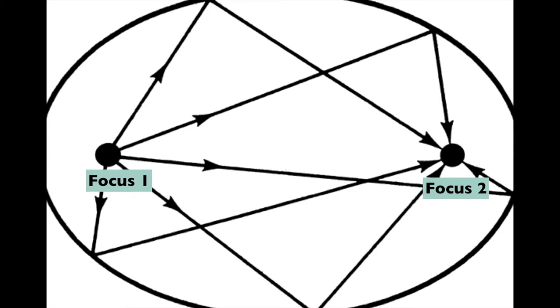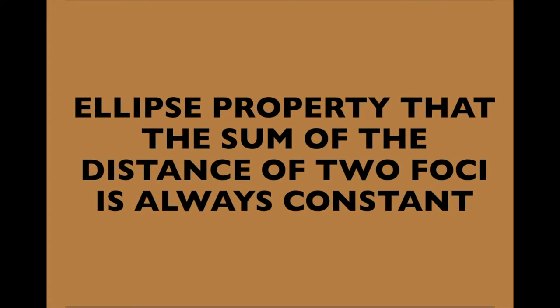In an ellipse, the sum of the distances from a point to each focus is constant. This property of an ellipse is the reason behind why whispering galleries work the way that they do, because when you whisper, the sound can bounce off any point in the room and still return to the other focus for the other person to hear — all because of the ellipse property that says the sum of the distances from a point to the two foci is always constant.